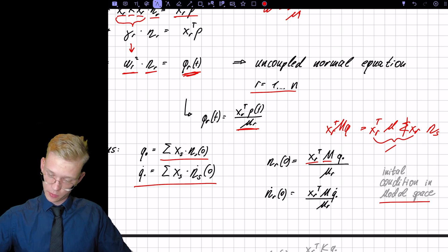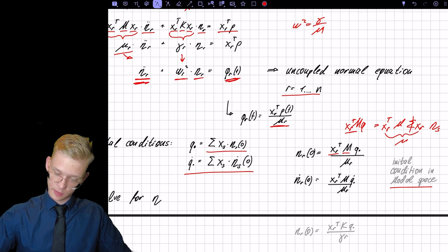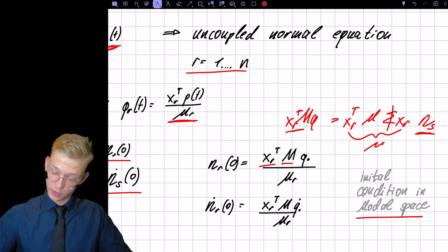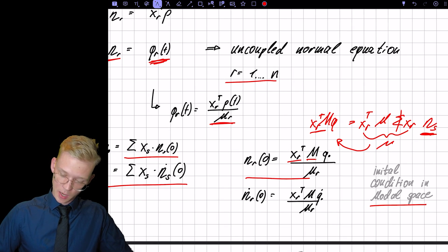This will be our modal mass. And then we just divide, then we have, then we want to get this eta. So we divide and that's how we get our function.